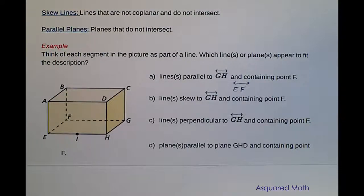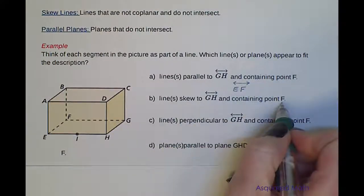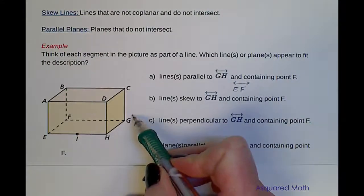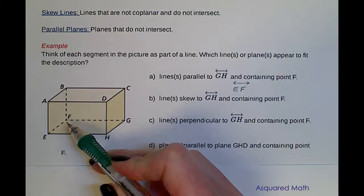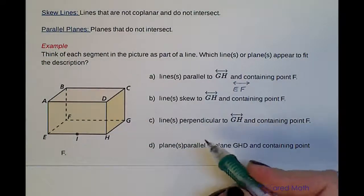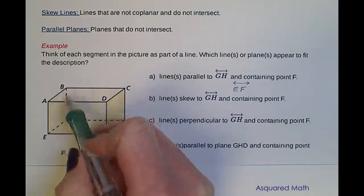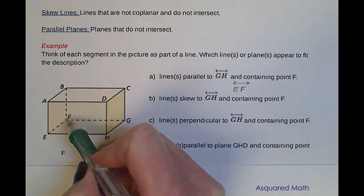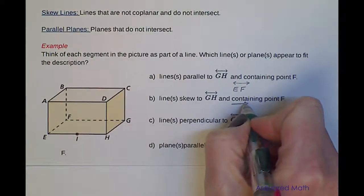The next thing we want to define is the skew line to line GH that contains point F. So again, we're looking at GH and point F — something that is skew, or will never intersect, because it's not coplanar. An example of this would be line BF. BF is not parallel to GH and it doesn't run on the same plane, so it will be a skew line. BF is our answer.